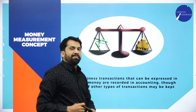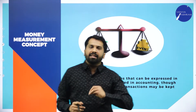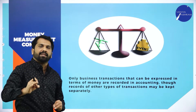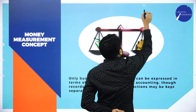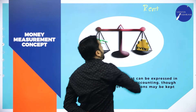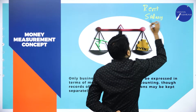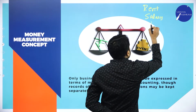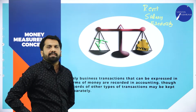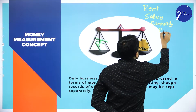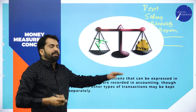The next one is money measurement concept — one of the interesting concepts. I will go with a small example so that you can easily understand. I take out all the expenses: first one, rent; second one, salary; third one, electricity bill; fourth one, repair charges. Just add this and tell me what is the total.